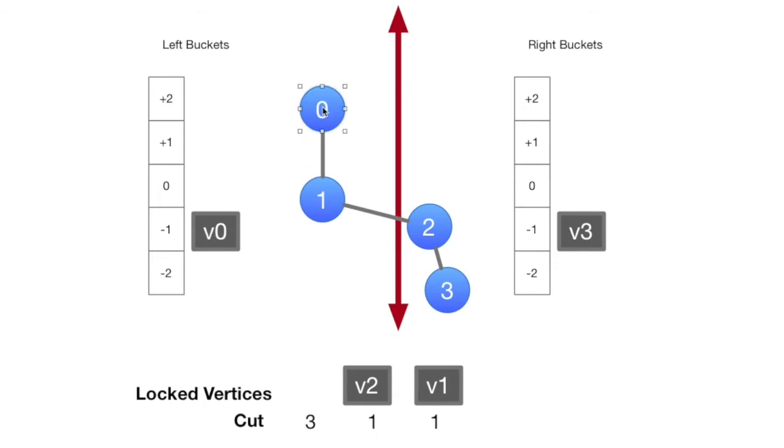So we're going to grab vertex 0, move him to the other side, take vertex 0 out of here, cut has gone up to 2, it's gotten a little bit worse. And what we normally do is, okay, vertex 0 moved, we'll need to update the things that are connected to vertex 0, vertex 1 is already fixed, nothing else to update.